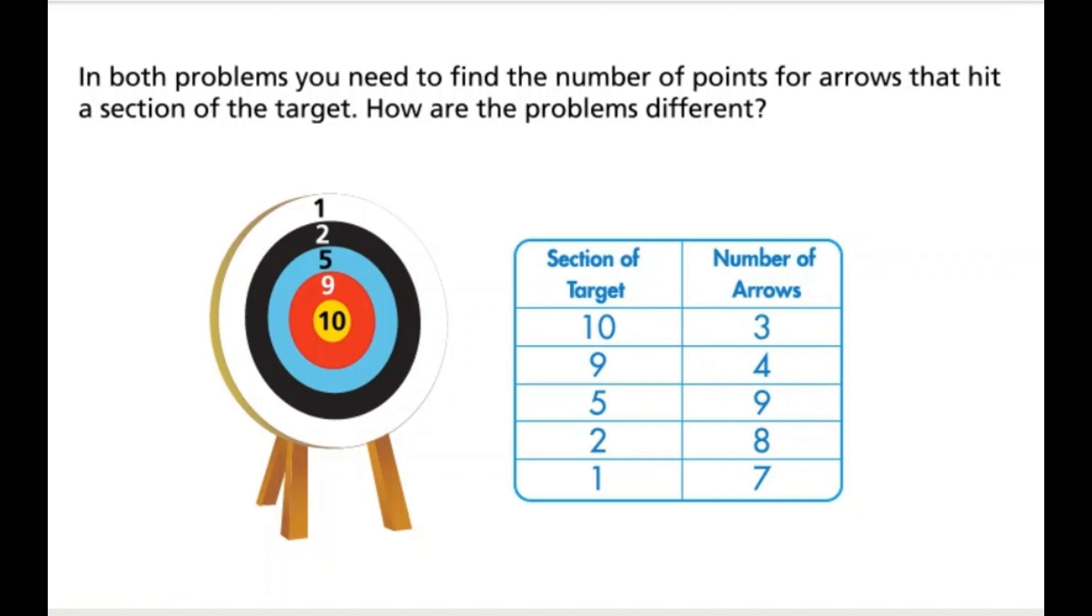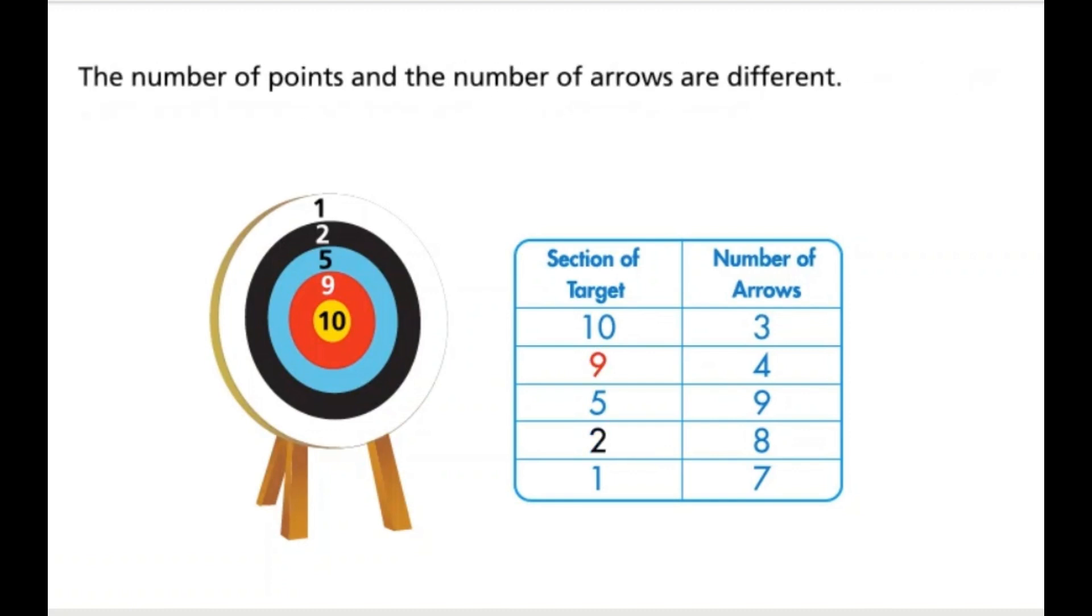In both problems, you need to find the number of points for arrows that hit a section of the target. How are the problems different? The number of points and the number of arrows are different.